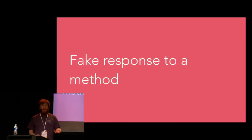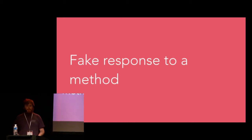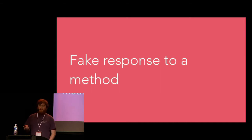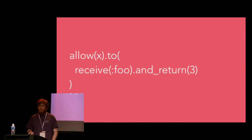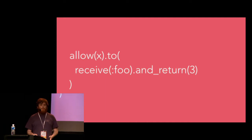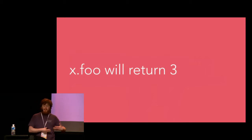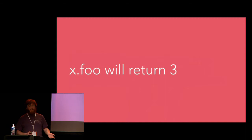Stubbing is a way of isolating your objects in tests from their collaborators by replacing implementations of specific methods with faked-out responses. When unit testing an object, it's a good idea to at least stub all of the collaborations between that object and its collaborators. The way you create a stub with the RSpec syntax is you say: allow x to receive foo and return 3. From that point on, anywhere in your test, when you invoke x.foo it will always return 3, replacing whatever the original implementation was.